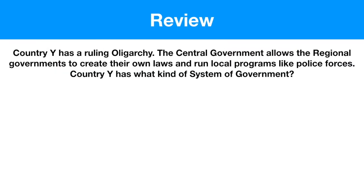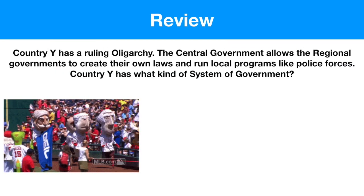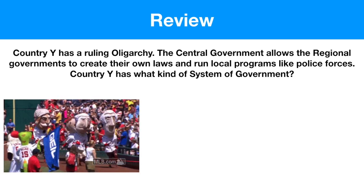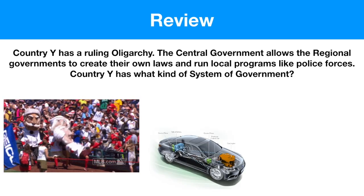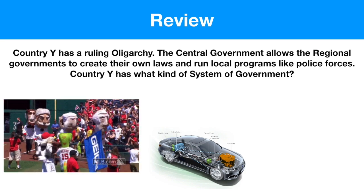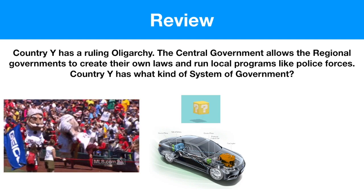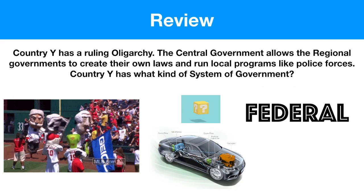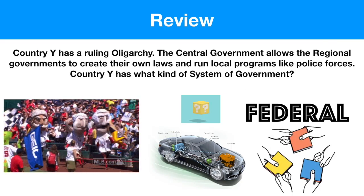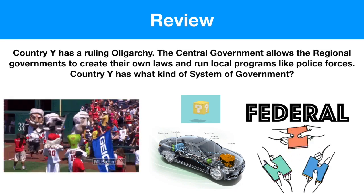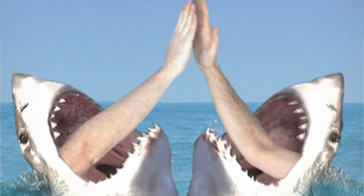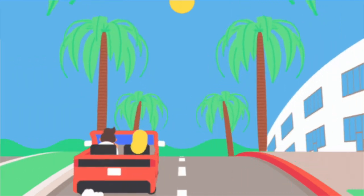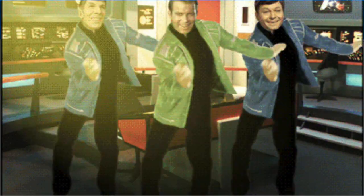One more review question: Country Y has a ruling oligarchy. The central government allows the regional governments to create their own laws and run local programs like police forces. What kind of system of government is Country Y? The answer is a federal system — where power is shared between central and regional governments. Okay, that's it for now. Thanks for sticking to the end of the video. We'll make more videos soon.